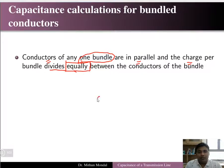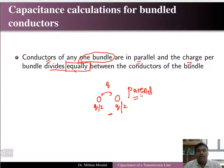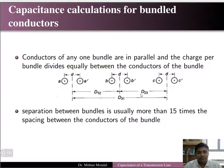If there are two conductors in a bundle and the net charge is Q, then in the bundle the charge will be divided as Q/2 and Q/2. These two conductors will be in parallel and the charge will be shared equally between them.